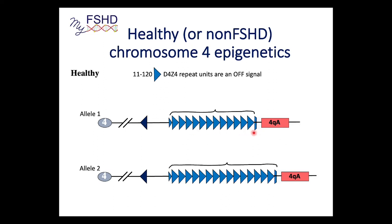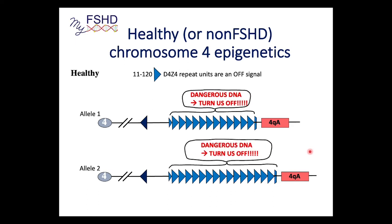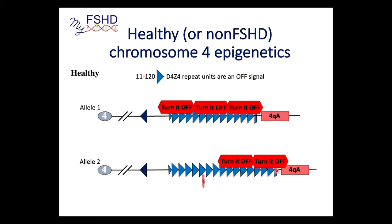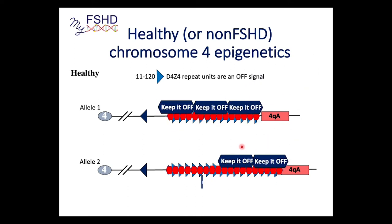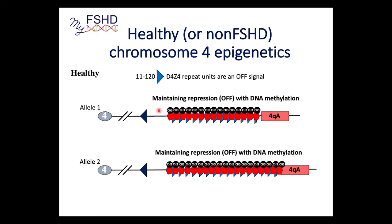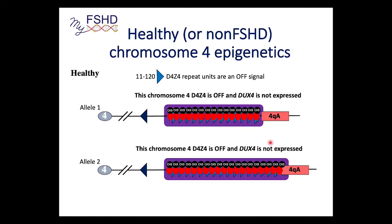The genome has a system for this because invasive and viral sequences tend to be repetitive, so the genome recognizes DNA repeats and says 'these are not good, we're going to turn them off.' The cell comes in and loads up factors to say 'turn this off,' establishing an initial off-switch. Then DNA methylation comes in to maintain repression permanently — first you turn it off, then methylation keeps it off. So both healthy chromosome 4s are going to be heavily methylated and off.